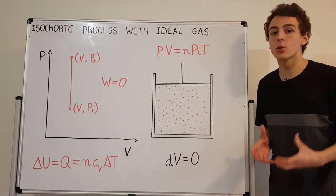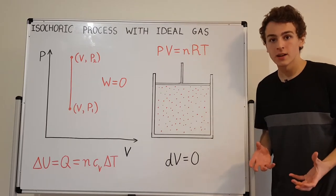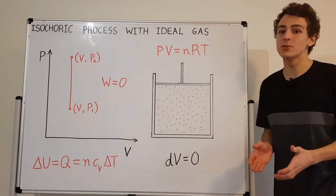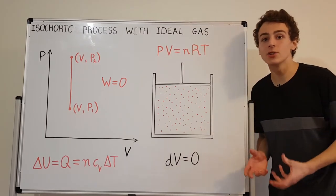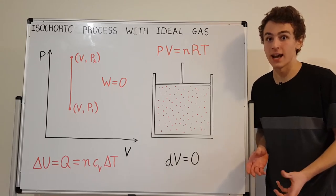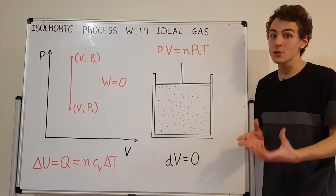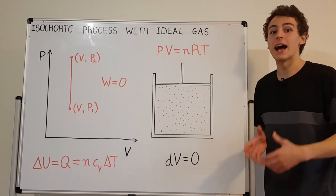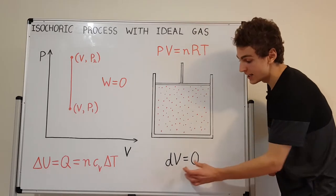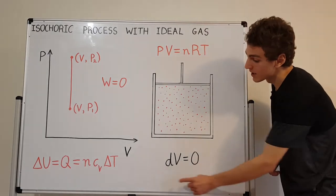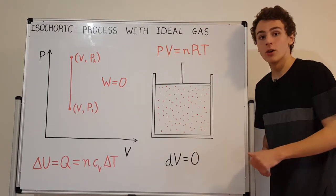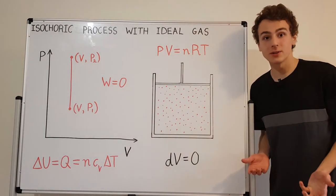And what is an isochoric process? An isochoric process is also known as an isovolumetric process. An isovolumetric process has constant volume, or dV is zero. So the change in volume is zero, and that's why it's constant.